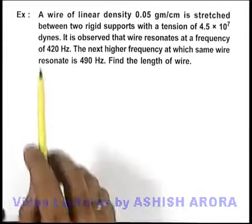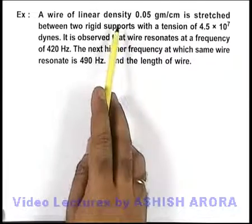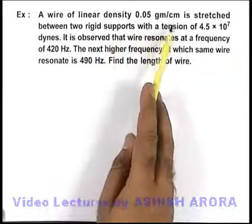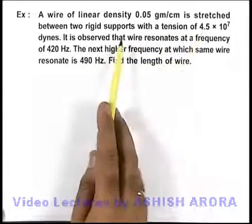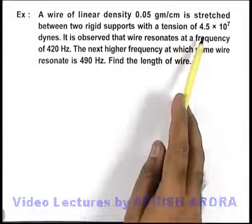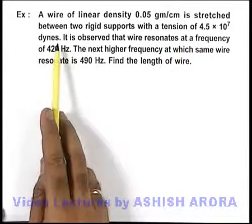In this example, we are given that a wire of linear density 0.05 gram per centimeter is stretched between two rigid supports with a tension of 4.5 into 10 to power 7 dynes.